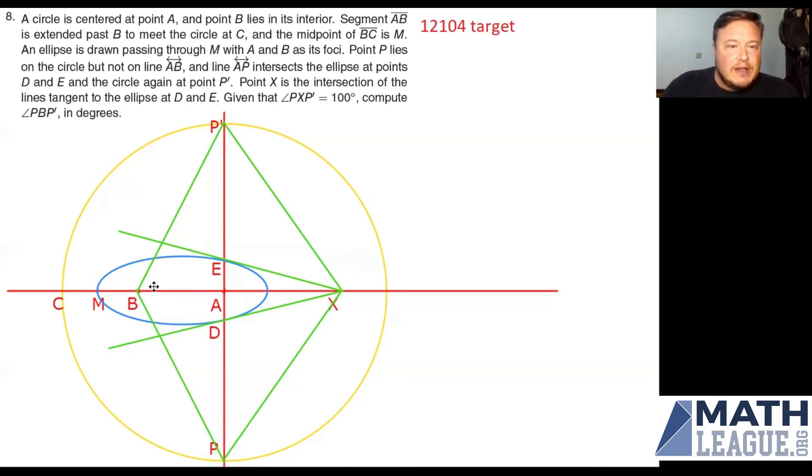So I've got segment AB extended past B. I drew point C here and then I drew point M, which is the midpoint of BC. Next I drew my ellipse passing through M with A and B as foci. So I went ahead and drew the ellipse so that BM was the same distance as the distance from A to the rightmost point on the ellipse.